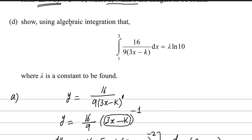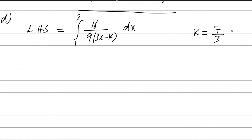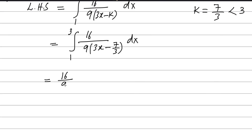Now the last part: show using algebraic integration that the integral from 1 to 3 of 16 over 9 times 3x minus k dx equals lambda log 10, where lambda is a constant to be found. For part D, to prove the result, consider the left-hand side: integral from 1 to 3 of 16 over 9 into 3x minus k dx. We use k equals 7 over 3 since k is less than 3. Substituting: integral from 1 to 3 of 16 over 9 into 3x minus 7 over 3 dx. Take the constant 16 over 9 outside the integral.